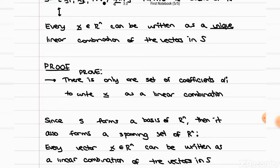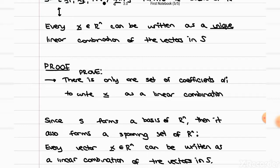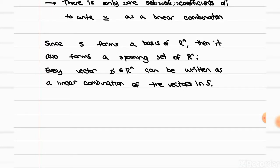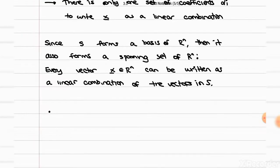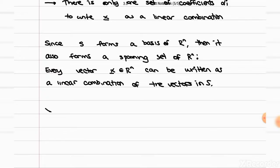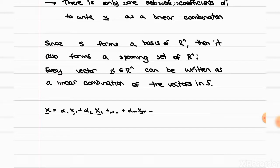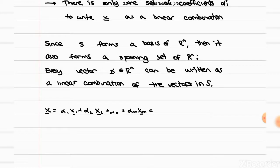To prove that it's unique, we're going to prove why it can't be non-unique. We start off assuming that there are at least two linear combinations possible — we pretend that we can write x in two ways. Either as alpha 1 times x1 plus alpha 2 times x2 and so on, or with another set of coefficients that we call betas: beta 1 times x1, beta 2 times x2, and so on.